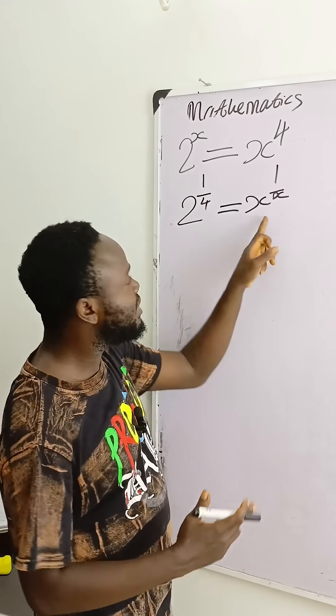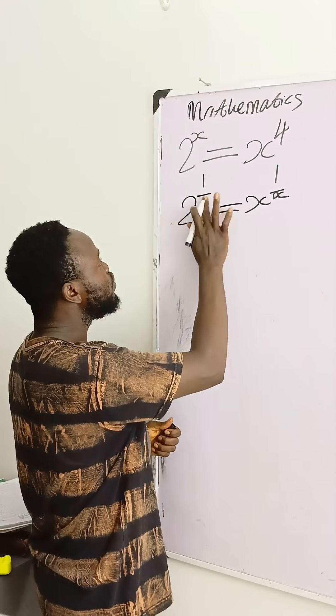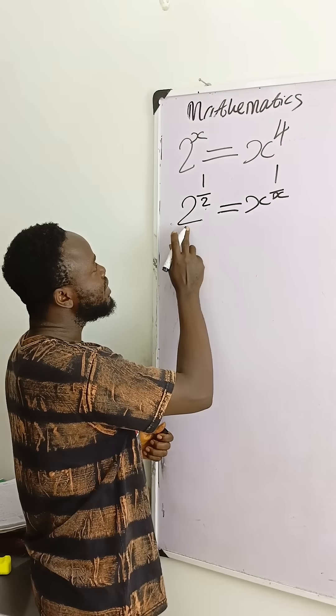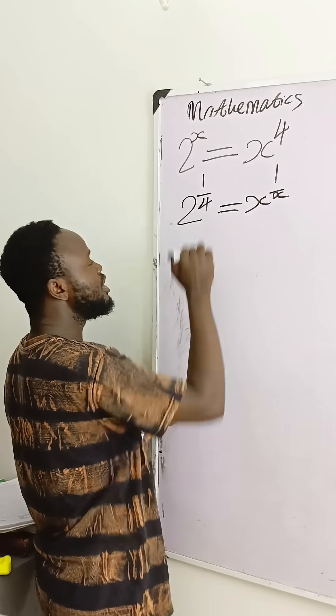Then this and this are not similar, and therefore we cannot compare them. Assuming we have 2 here, then you can see that this one and this one are similar. So what are we going to do? Let's make it similar.